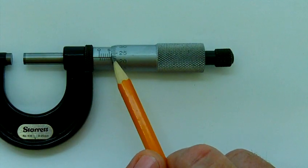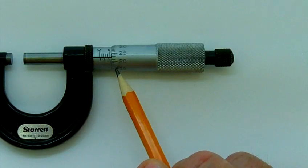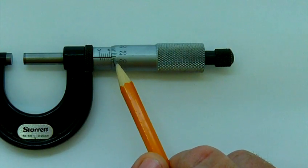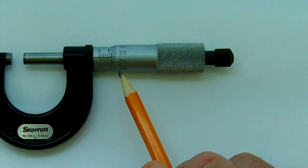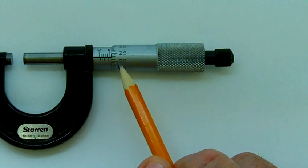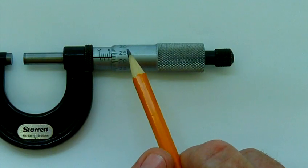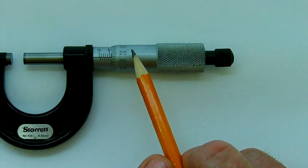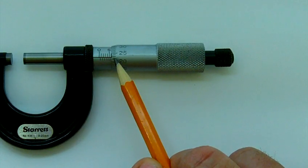Now we have to come over to the thimble because we're past the six millimeter graduation. Each graduation on the thimble is 0.01 millimeters. So it'll go around 0, 5, 10, 15, I think you can just start to see 20, 25, 30, 35, 40, 45, all the way up to 50 or 0.5 millimeter, each one being 0.01 mil.